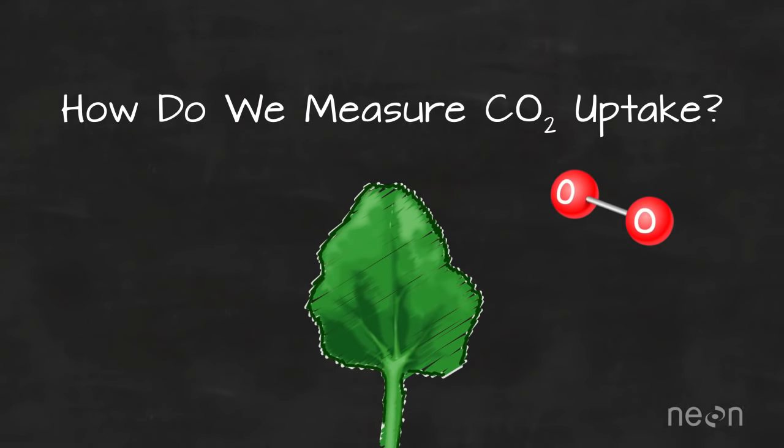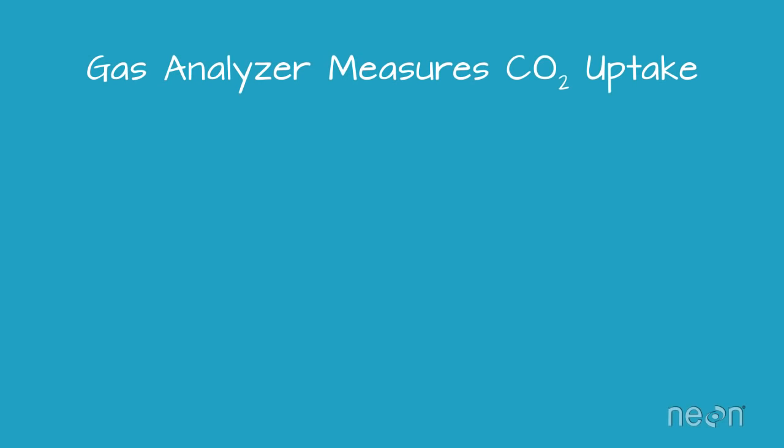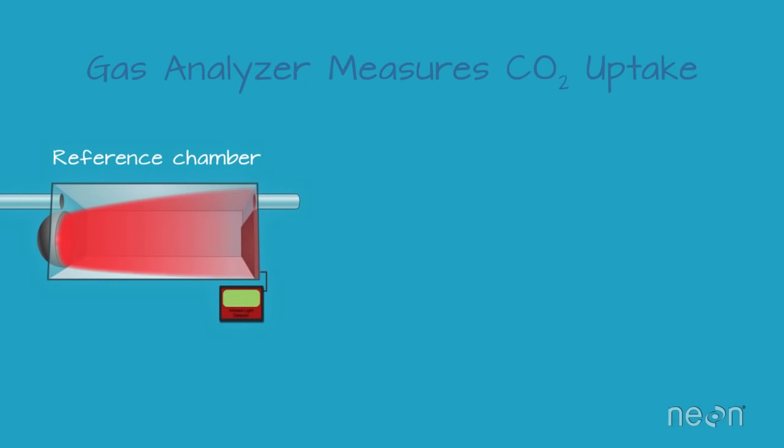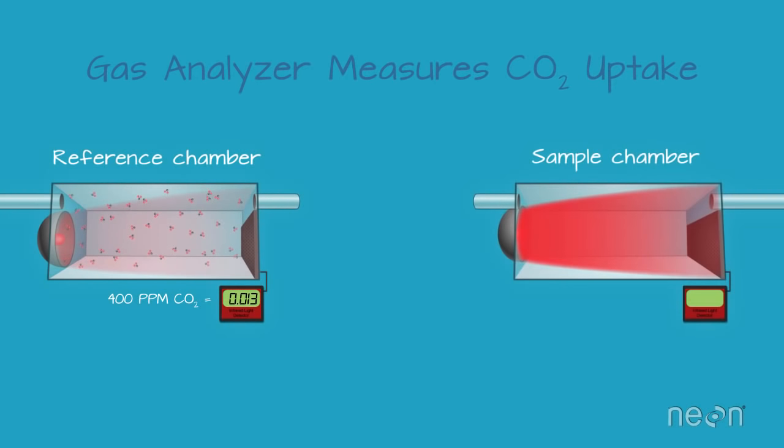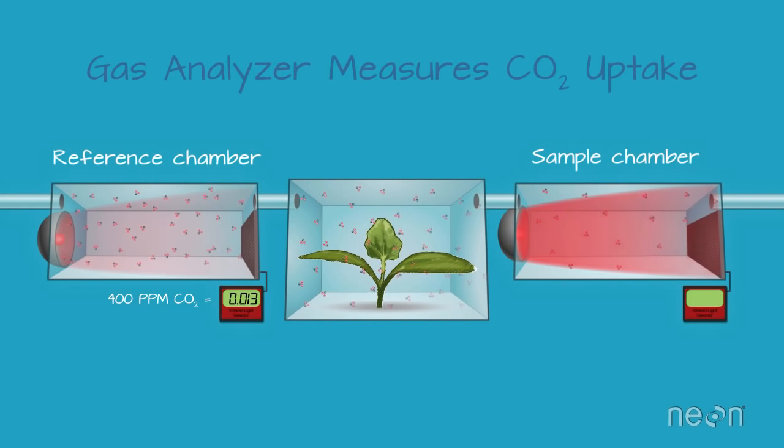Well, we can use our infrared gas analyzer chamber system. First, add a reference chamber on the left. We'll flow CO2-rich air through this reference chamber and use the infrared light detector to measure how much CO2 is in the air. Next, add a second sample chamber on the right. Air flows from the reference chamber to the chamber with a leaf in it and into the sample chamber. The sample chamber uses infrared light detector to measure the amount of CO2 in the air after the leaf absorbs what it needs to grow.